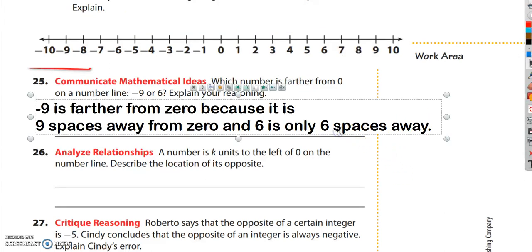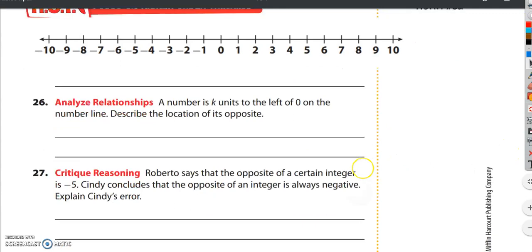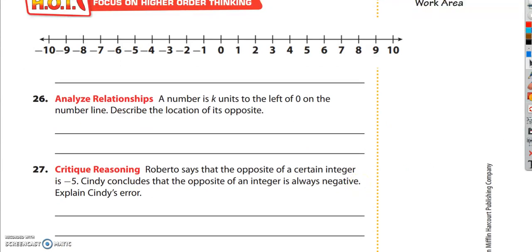Number 26 says, a number is k units to the left of 0 on a number line. Describe the location of its opposite. A lot of kids get hung up on this idea of k because they say, well I don't know what that means. Let's say I put k over here. I wasn't quite sure what it was. I don't know what the number is.